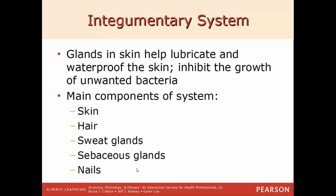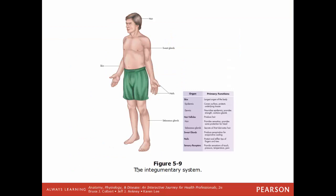The main components of the integumentary system are the skin, nails, hair, and all the different kinds of glands throughout the skin — sweat glands, sebaceous (oil) glands. In the standard anatomical position you can see hair, skin, sweat glands like in the armpit, nails like fingernails and toenails, and the sebaceous glands.